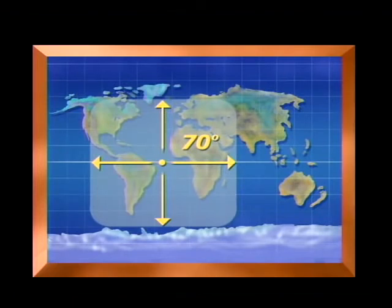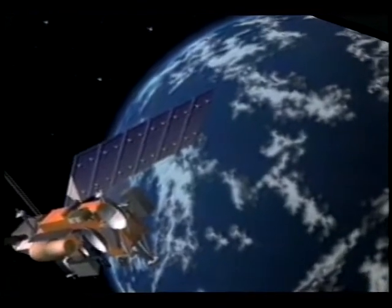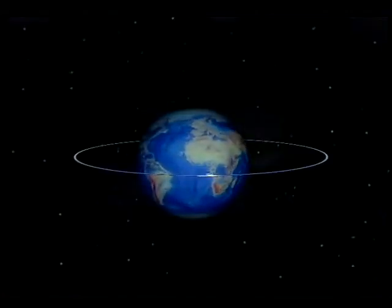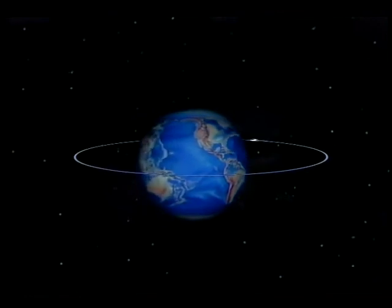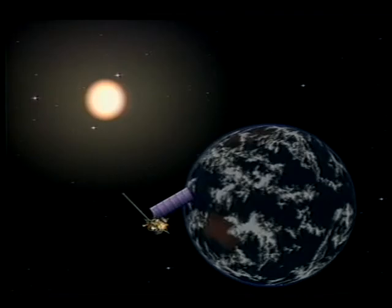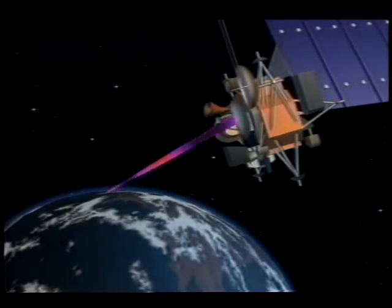Effective satellite communications from geosynchronous orbit is not possible at either pole. However, because of their altitude, their field of view covers nearly half the globe. A special type of geosynchronous orbit with an inclination of zero degrees is called a geostationary orbit. It appears to hover over a fixed point on the Earth's surface at the equator. Most U.S. communications satellites are in geosynchronous orbits providing near worldwide communications coverage.